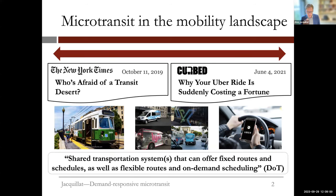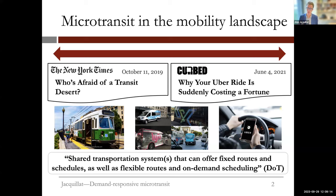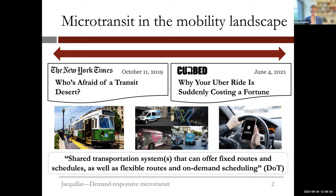There has been the emergence of a wide range of services in between. These are defined by the US Department of Transportation as shared transportation systems that can offer fixed routes and schedules as well as flexible routes and on-demand scheduling. There are multiple embodiments of that middle ground, and today we're looking at one specific embodiment—microtransit—and how to design and operate it.